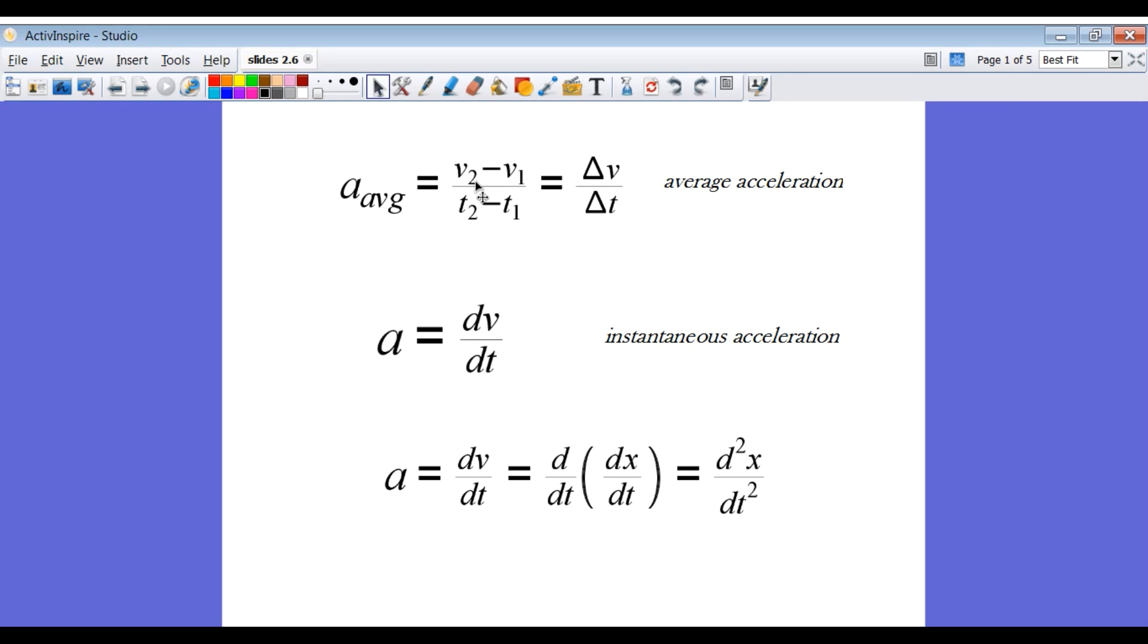So whatever your velocity is at some time point, and what it was initially, take the difference of those two velocities and divide by the amount of time that took place between the first velocity and the second velocity. That is our average acceleration over that time interval.